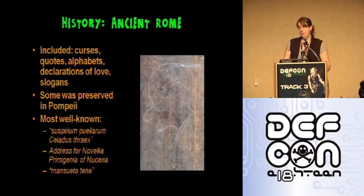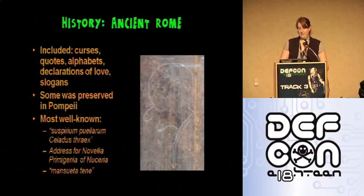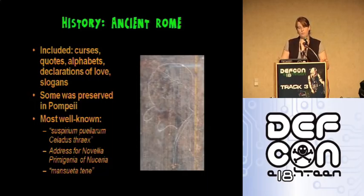Not to be outclassed by the Greeks, though, the Romans were also known for using graffiti to advertise prostitution. In one area, you can find an address for a well-known prostitute named Novellia Primigena of Neuseria, and in another, you can find etchings of phalluses with 'Mansueta Tene' — or in English, 'Handle with Care' — scrawled next to it.